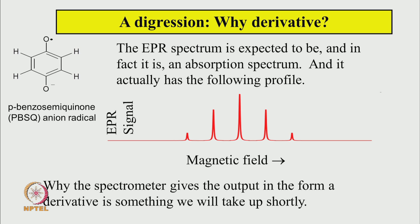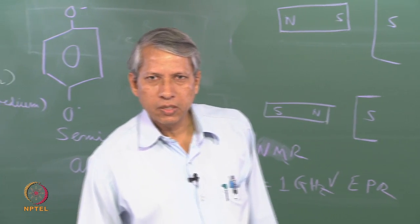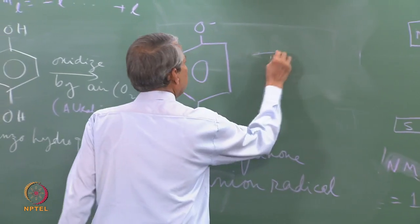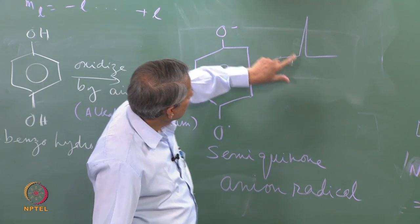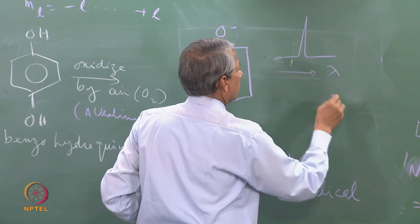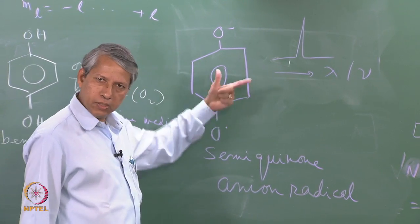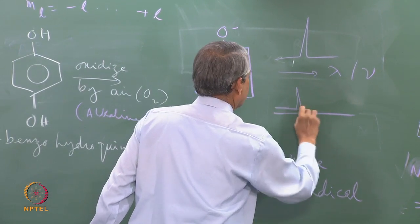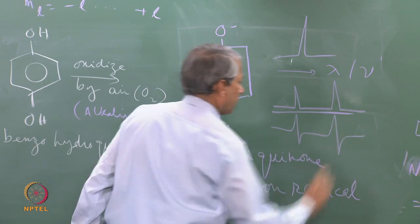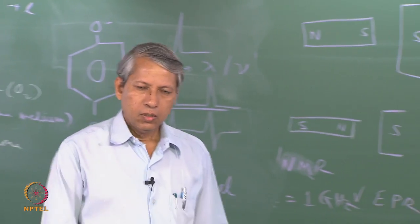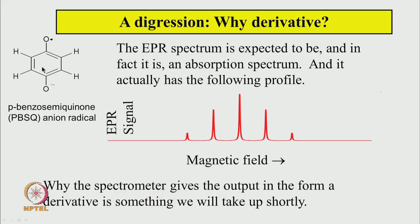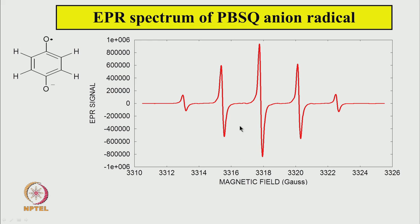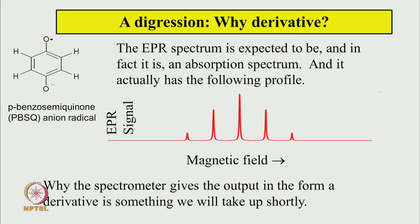Before moving on — a brief digression. The EPR spectrum is displayed in derivative form. In conventional absorption spectroscopy the spectrum looks like absorption peaks as a function of wavelength or frequency; here plotted as a function of magnetic field we would expect the same absorption shape, but instead the spectrometer records the derivative. So the 5 absorption lines correspond to 5 derivative peaks — why the spectrometer gives a derivative output is something we will take up shortly.